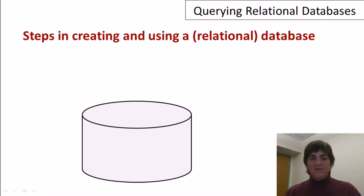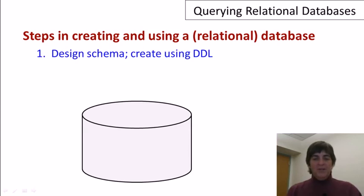Let's start by talking about the basic steps in creating and using a relational database. By the way, I should mention that database people have this habit of drawing databases and database systems as gigantic disks, so I'll be using that same habit. The first step is to design the schema of the database and then create the schema using a data definition language.